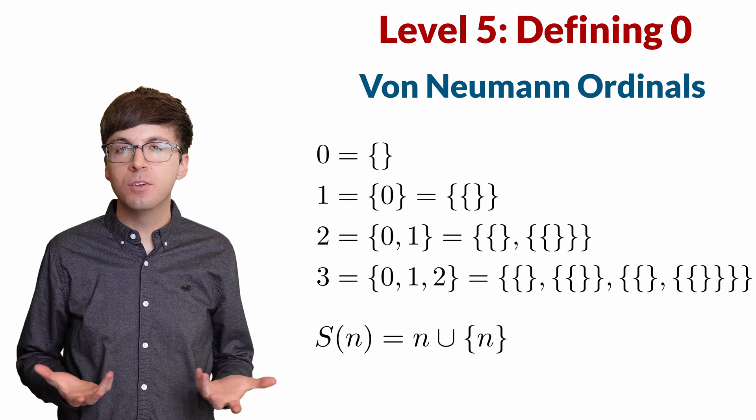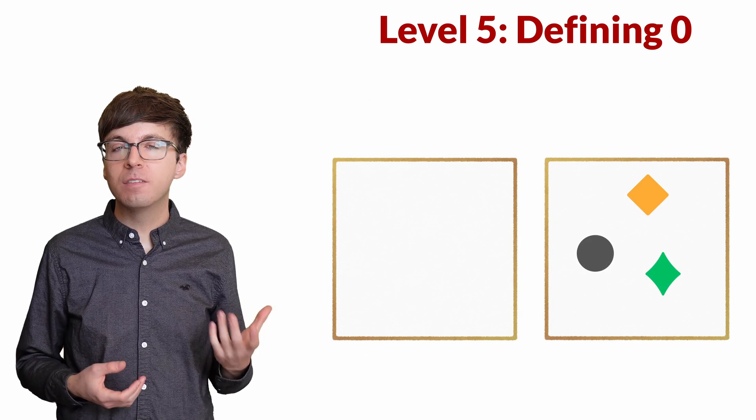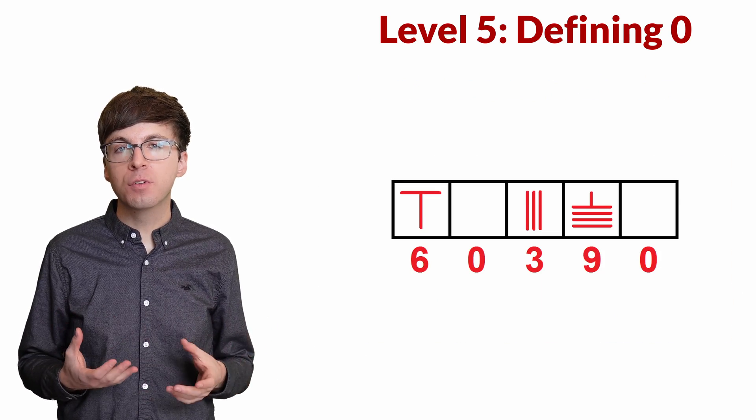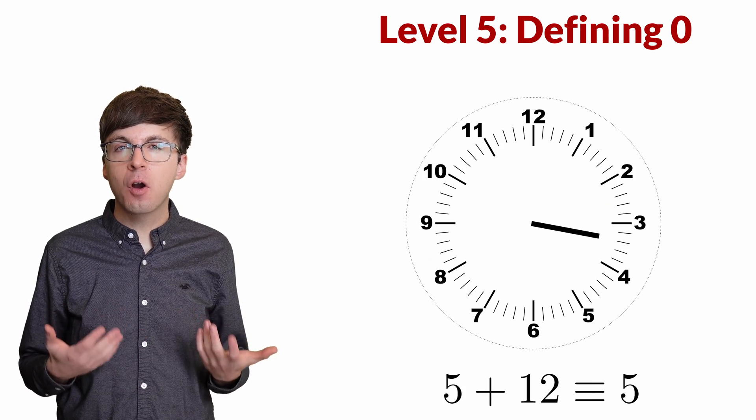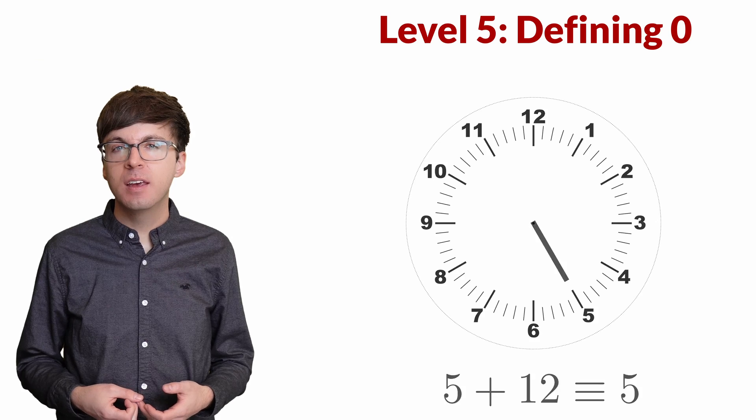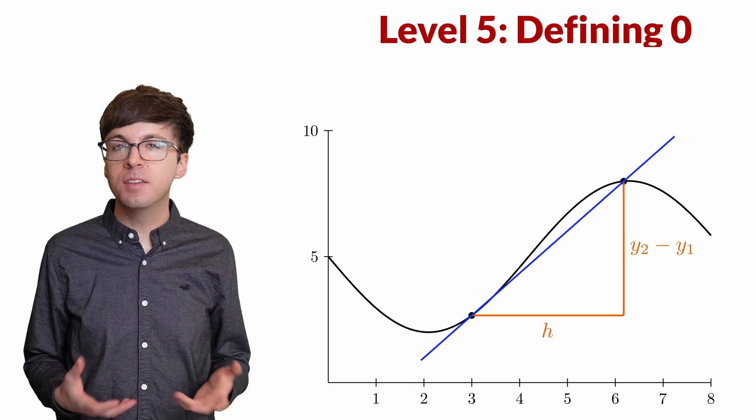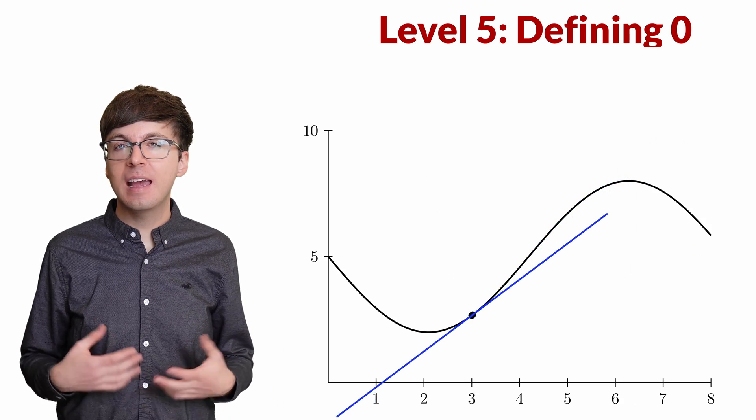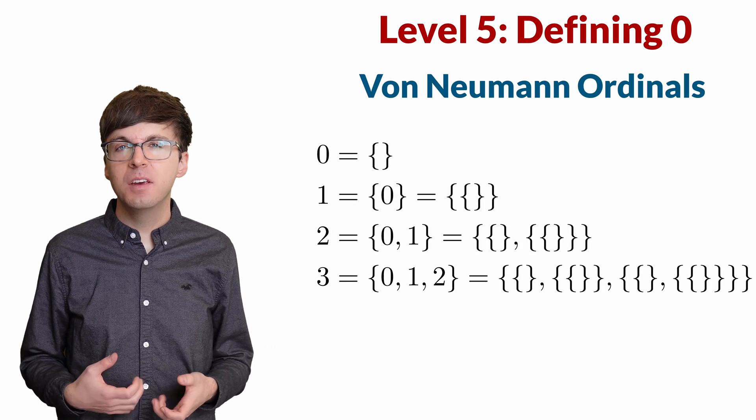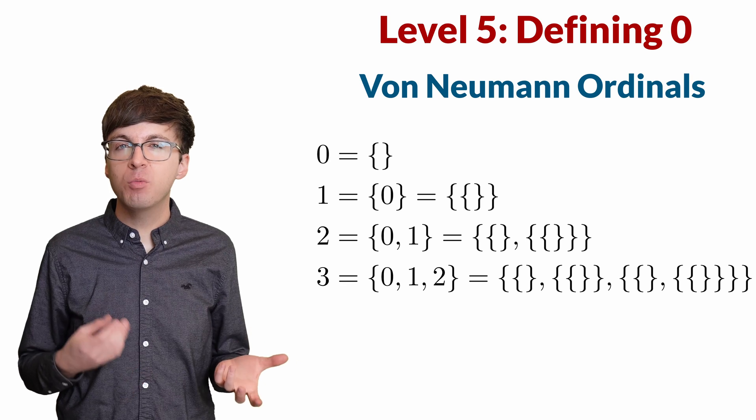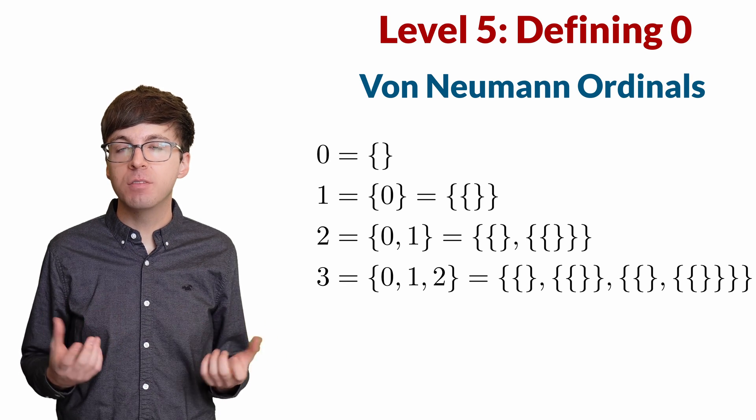So what exactly is zero? It's the quantity of nothing, a placeholder that allows us to write decimal numbers, the additive identity at the heart of algebraic structures, the counterpart of infinity that allows us to do calculus, and as a von Neumann ordinal, zero is the empty set. Zero lies at the heart of algebra, calculus, and much advanced mathematics.